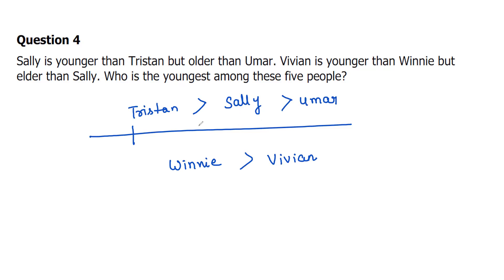So from the first sentence we get Tristan is elder than Sally. And from the second sentence we get Winnie is greater than Vivian and Vivian is greater than Sally. Can we say Umar is younger than Sally? Right, from here you see Umar is younger than Sally.